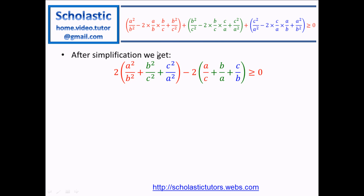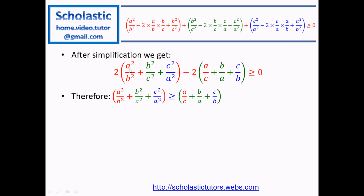Similarly, we get two B squared over C squared and two C squared over A squared. Then minus two times — B cancels giving A over C, C cancels giving B over A, and A cancels giving C over B. So when you take the negative part to the right-hand side, we can conclude that A squared over B squared plus B squared over C squared plus C squared over A squared is greater than or equal to A over C plus B over A plus C over B.